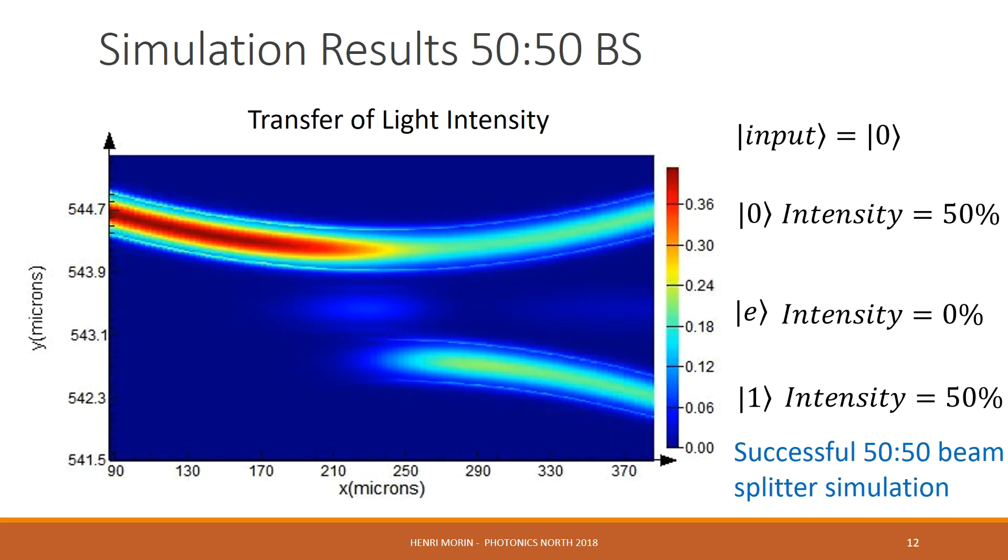Now, for some simulation results. Here are results for a 50-50 beam splitter. The plot is of the light intensity. The x and y axes are the location of the device within the numerical simulation. Our input is the zero waveguide, and as we can see, we have a good 50-50 split of intensity between the zero and one waveguide at the output. Also, we can see that there is no light in the excited waveguide as expected. So we can say that this is a successful 50-50 beam splitter.